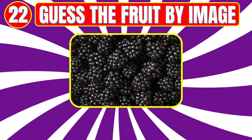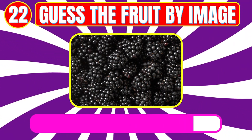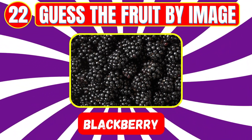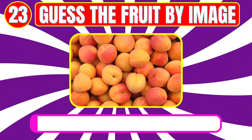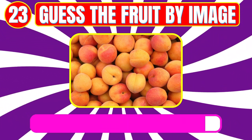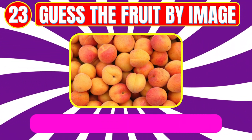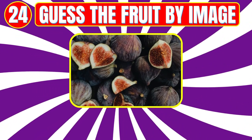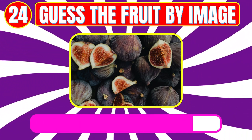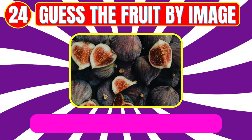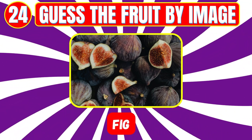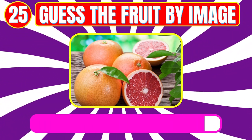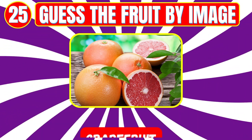Level number twenty-two. Guess the fruit by image. Fruit name is blackberry. Level number twenty-three. Guess the fruit by image. Fruit name is apricot. Level number twenty-four. Guess the fruit by image. Fruit name is fig.